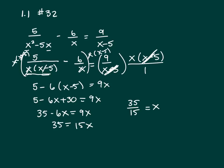This will reduce by 5 — 5 will go into 35 seven times, and 5 into 15 three times. So 7 thirds is your answer.